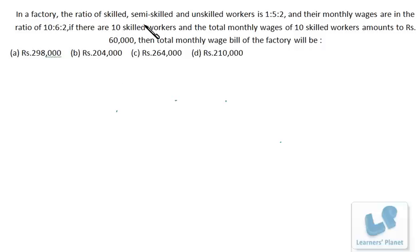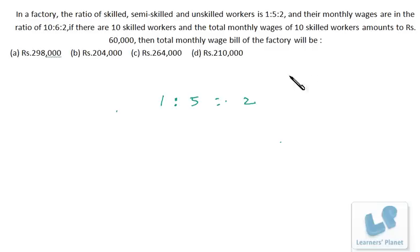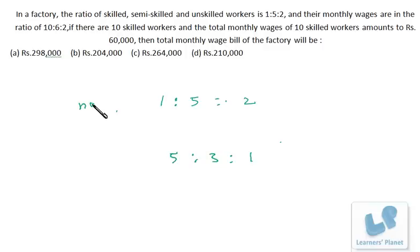In a factory, the ratio of skilled, semi-skilled and unskilled workers is 1:5:2, and their monthly wages are in the ratio 10:6:2, which simplifies to 5:3:1. So this is the ratio of number of workers, and this is the ratio of their wages.